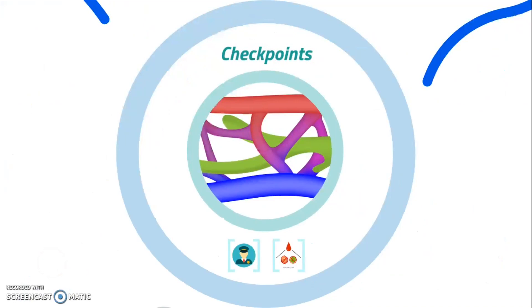The lymphatic system checks our blood for intruders and foreign substances, such as pathogens or toxins. In the picture, you can see blood vessels on both sides, and in the middle, in green, the lymph vessels.